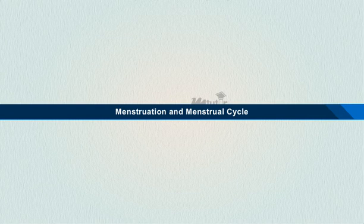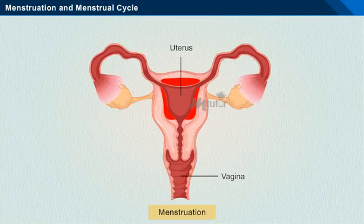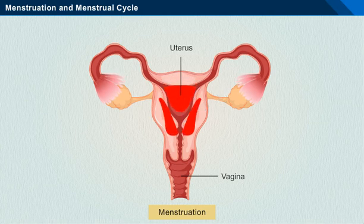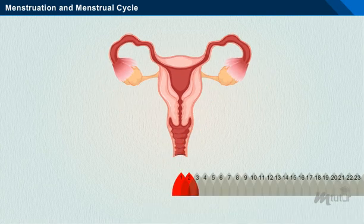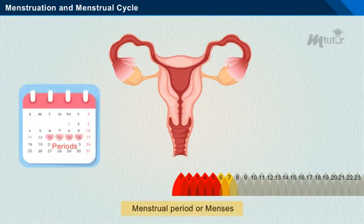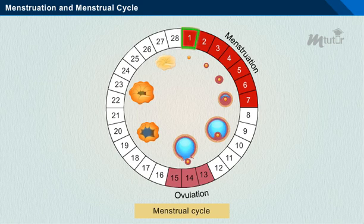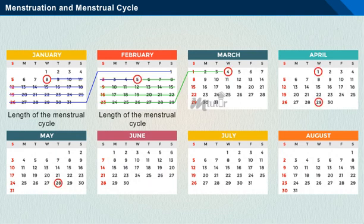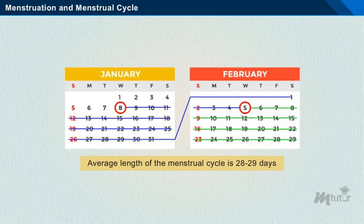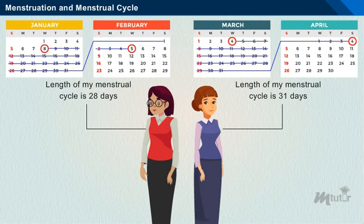Menstruation and Menstrual Cycle. Menstruation is the process in which blood and other tissues are shed from the uterus and leave the body through the vagina. The beginning of the cycle of menstruation is called menarche. It is also called the menstrual period or menses. The first day of bleeding is marked as the first day of the menstrual cycle. The length of the menstrual cycle is calculated from the first day of the period to the day before the beginning of the next period. The average length of the menstrual cycle is 28 to 29 days.